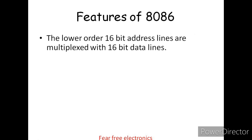The lower-order 16-bit address lines are multiplexed with the 16-bit data lines. In the 8085 we have 16 address lines A0 to A15. In the 8086, out of the 20 address lines A0 to A19, the first 16 lower-order address lines A0 to A15 are multiplexed with the 16-bit data lines D0 to D15.